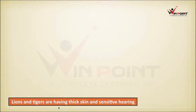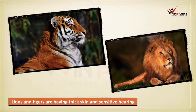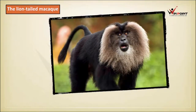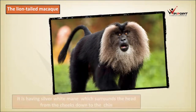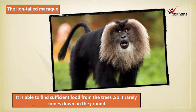Lions and tigers are having thick skin and sensitive hearing. The lion-tailed macaque is adapted to live on trees. It has a silver-white mane which surrounds the head from the cheeks down to the chin. It is able to find sufficient food from the trees, so it rarely comes down to the ground.